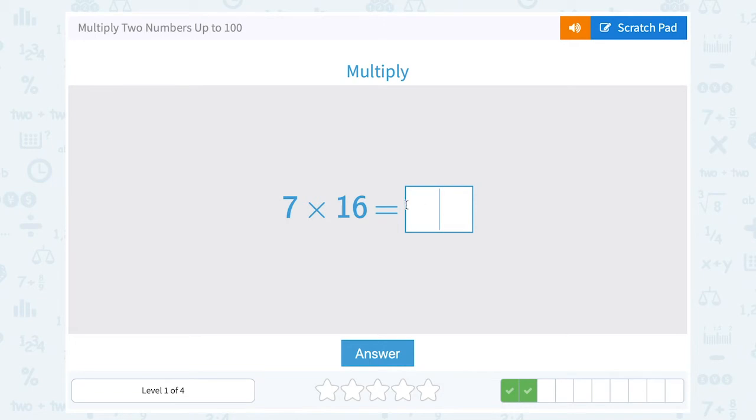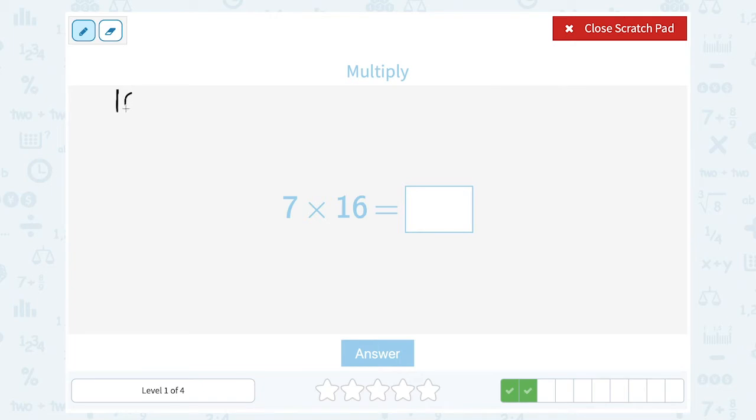Seven times 16. I'm going to do the same thing. And you can write seven times 16 or 16 times seven, they mean the same thing. Remember, order does not matter when you multiply. But I like to write the number with more digits first, so I can only multiply one time.